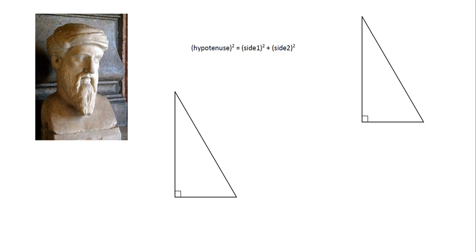Before we actually get to the theorem, we are just going to look at a few little facts about right-angled triangles. The first and most obvious thing is right-angled triangles means it's a triangle that has a right angle — in other words, a triangle that has got an angle equal to 90 degrees. Then we have a fancy word we use when we talk about the sides of right-angled triangles.